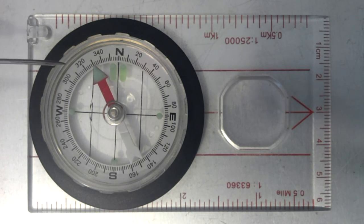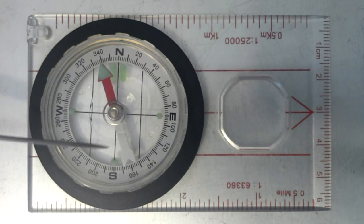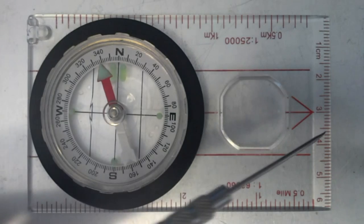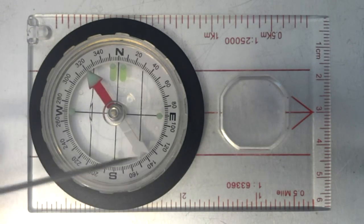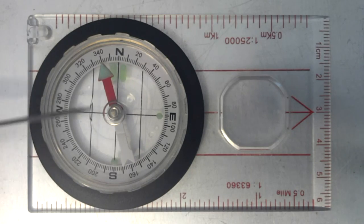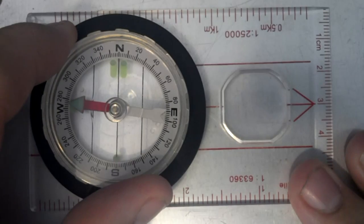This is the orientating arrow. This is the compass needle. This is your direction of travel. These are the orientating lines. And this is the compass housing, or bezel - it's turnable and rotates.